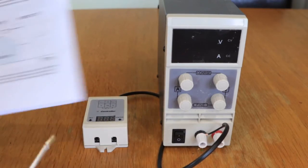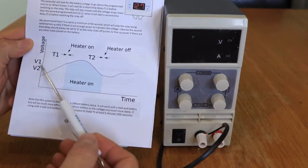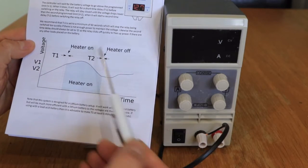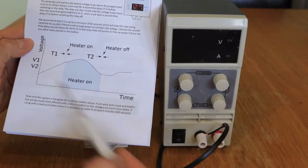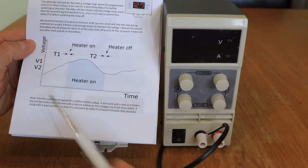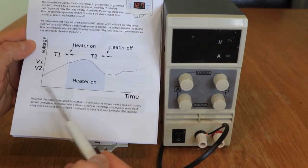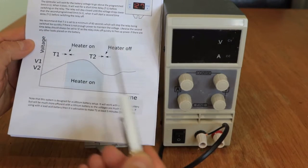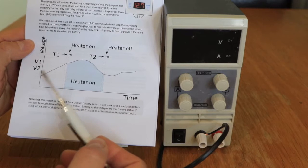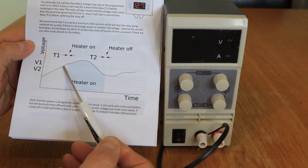So the things we're going to program are V1, V2, T1, and T2. This is just a very typical diagram of how the voltage might vary with time. For example, this is a charging profile - the voltage is rising because our battery is charging.